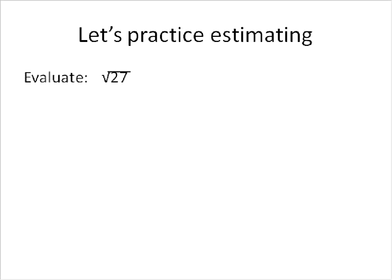Alright. So let's practice a little bit. If we're going to evaluate the square root of 27, the first thing that we do is find perfect square factors. In this case, 27 is 9 times 3. 9 is a perfect square, so we can pull that out and find the square root of 9 is 3. So in other words, this is 3 times the square root of 3.